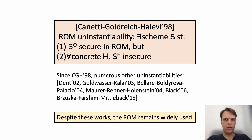Unfortunately, Canetti, Goldreich, and Halevi showed that random oracles must sometimes fail. They give what is called an uninstantiability result for the Random Oracle Model, by exhibiting a scheme S that is secure in the random oracle model but insecure under any concrete hash function. Since their work, numerous other uninstantiability results have been shown.